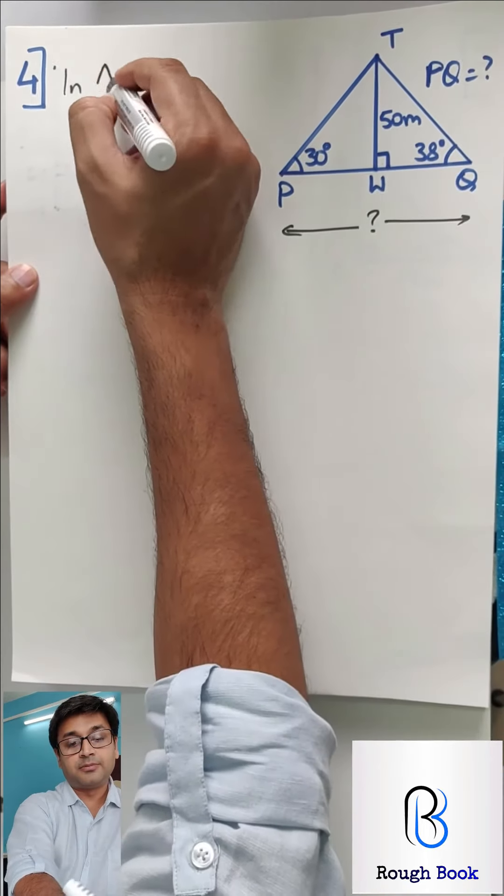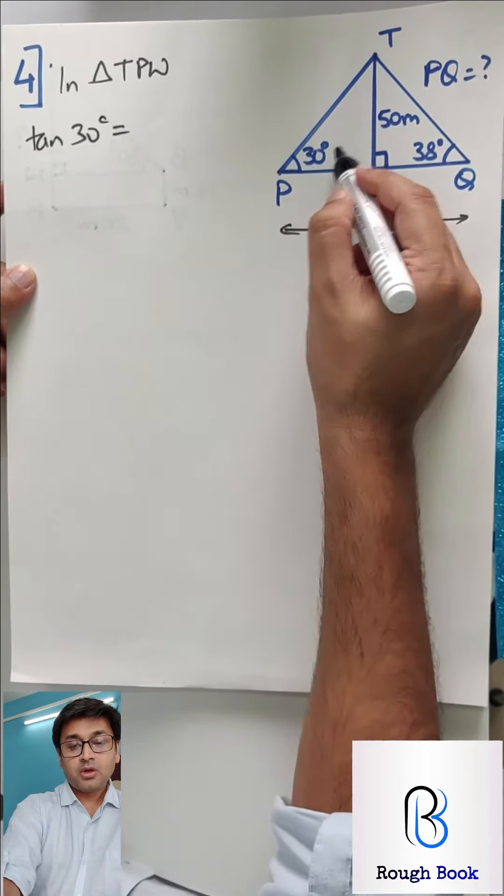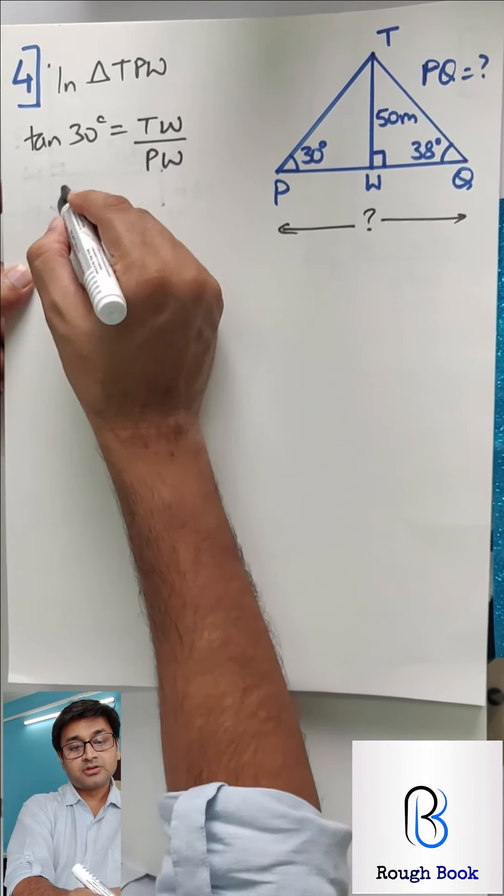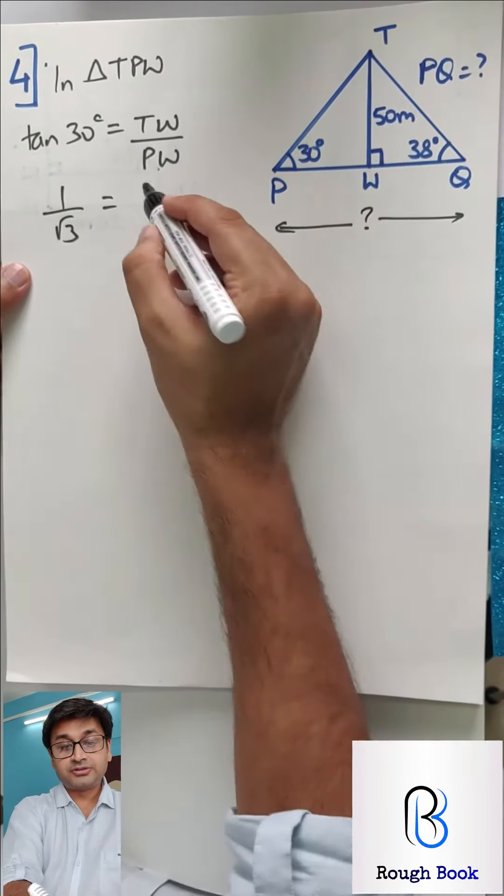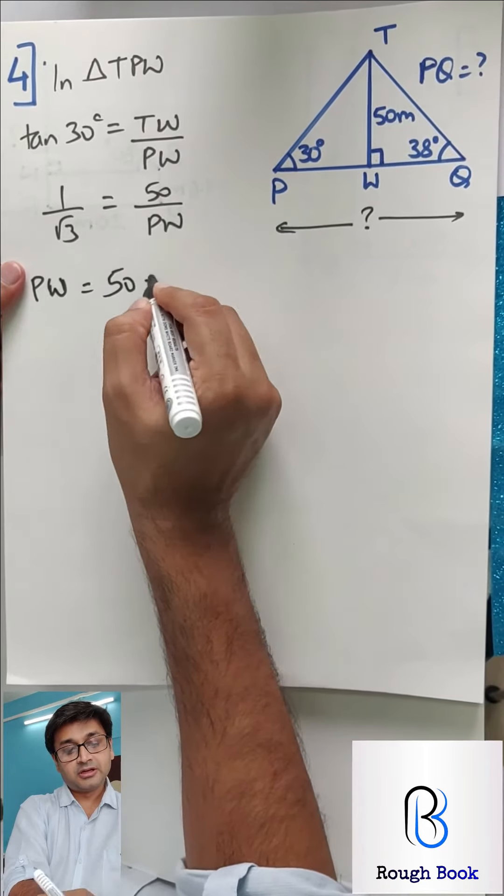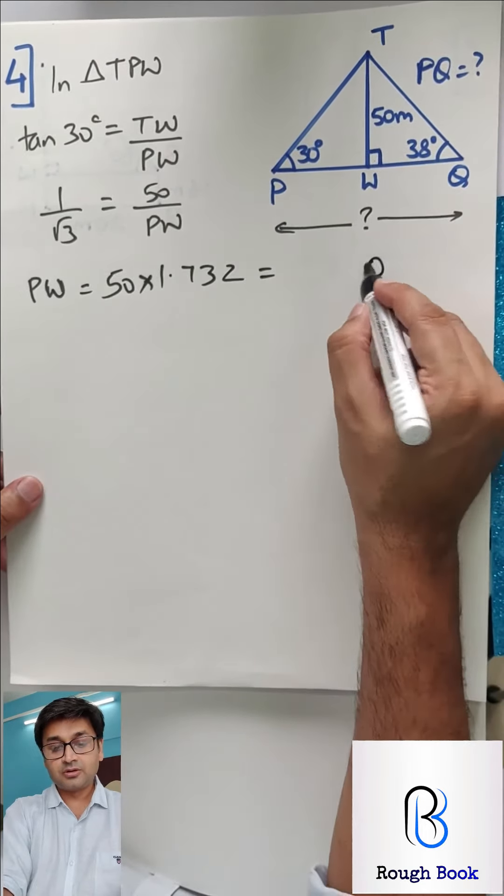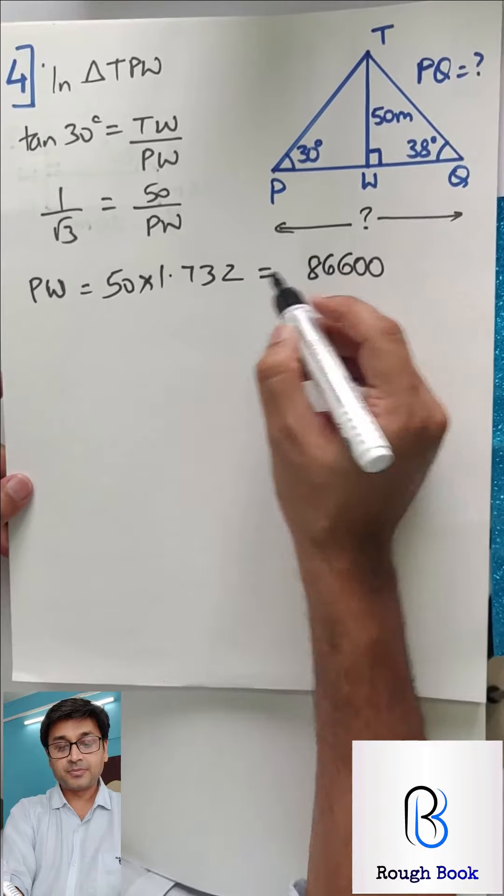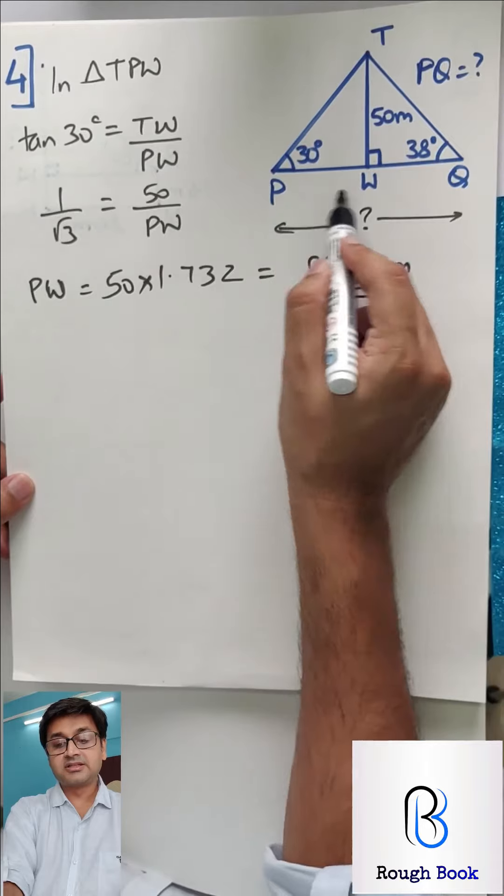Most important, whenever you are drawing the diagram, 90 degree is must. If you do not draw 90 degree, board can cut one mark. So don't forget to draw a 90 degree. In triangle TPW, we are using tan 30, which is opposite TW upon adjacent PW. So tan 30 is 1 by root 3. TW is 50 upon PW. So PW will be 50 into root 3. So 50 into 1.732. So 86.60 meters is this distance PW.